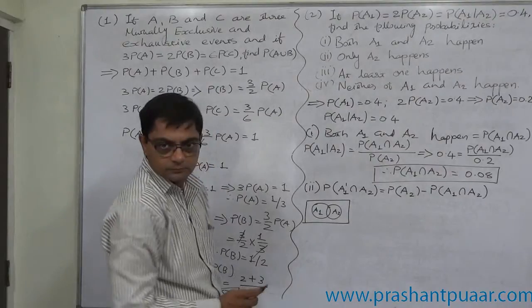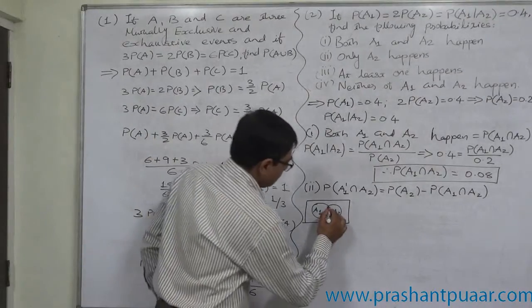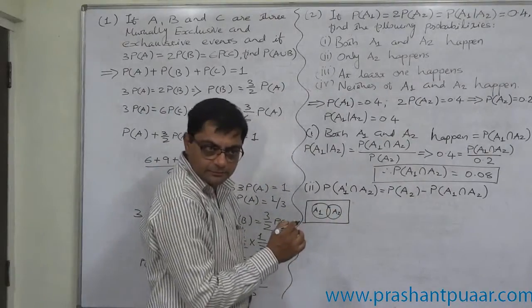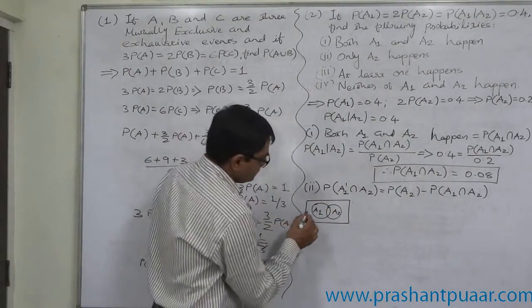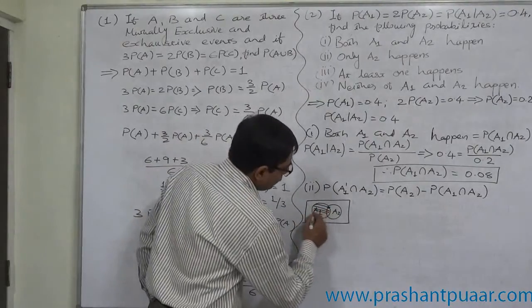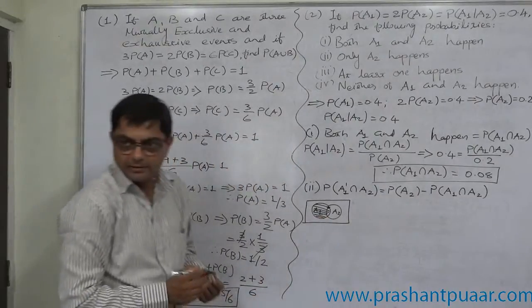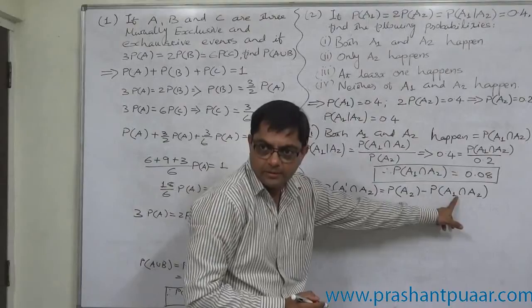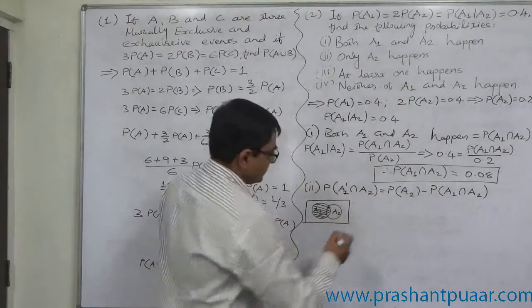We want complement of A1. What is complement of A1? Not A1, everything else. So remove A1. That means from A2 also, we have to subtract probability of intersection.